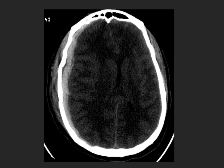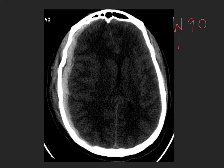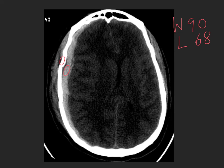Here the image has been displayed differently — the window has been made wider at 90 Hounsfield units, and the level adjusted to 68 HU. Now we can distinguish between the density of the skull and the adjacent subdural hemorrhage. This is called a vascular window, and it's one of the three windows a radiologist uses for any head CT: a bone window for the skull, a brain window for the brain parenchyma, and a vascular window to look for areas of acute hemorrhage close to the skull.